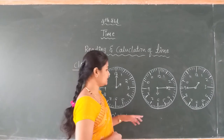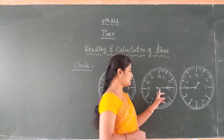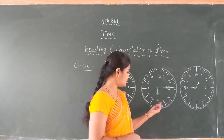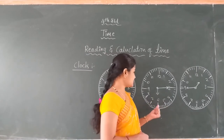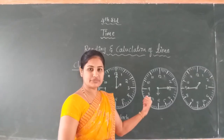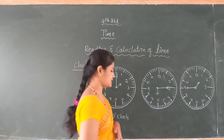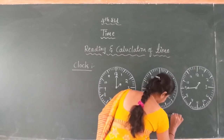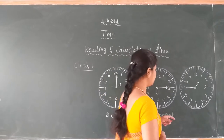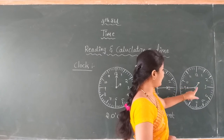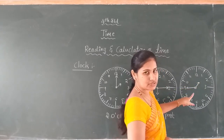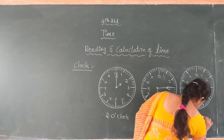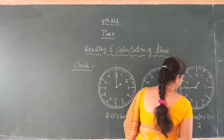Come to the second clock. Dear student, the short hand is at 6 and the long hand is at 3. How to read the time? We read it as quarter past 6. And in the third clock, the short hand is at 1 and the long hand is at 9. It is quarter to 2.